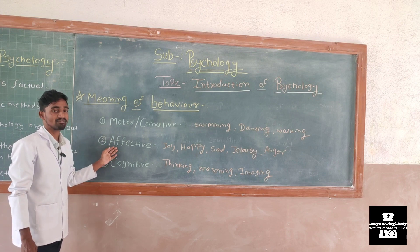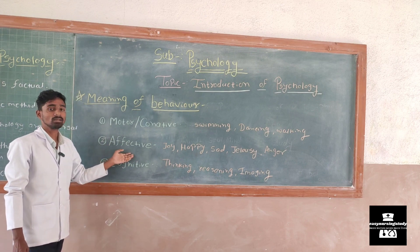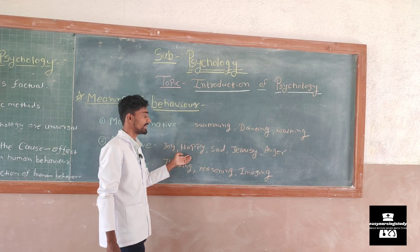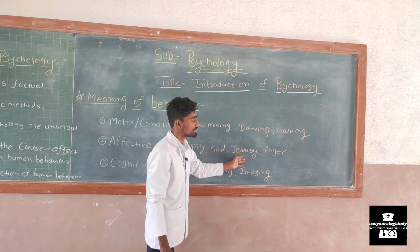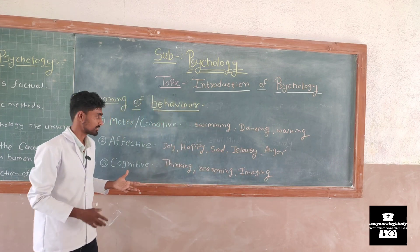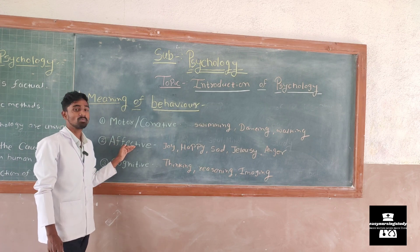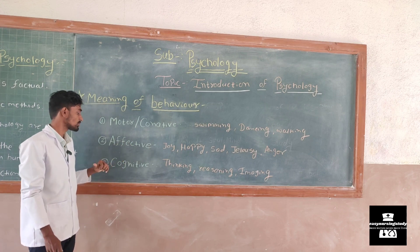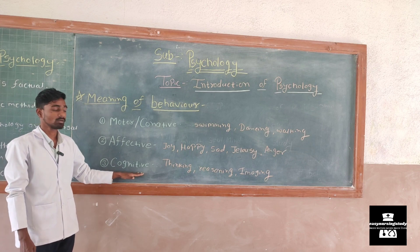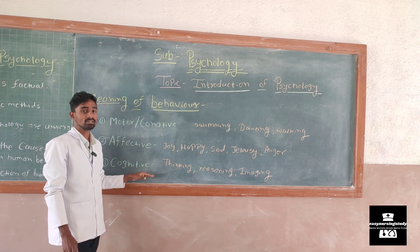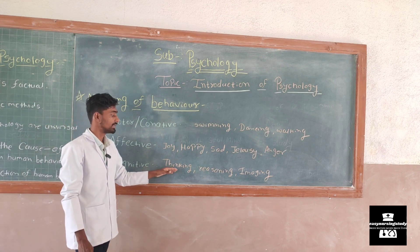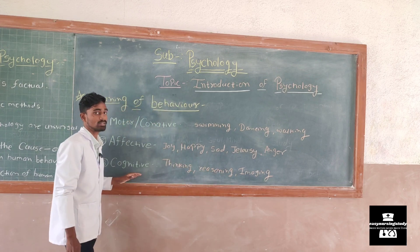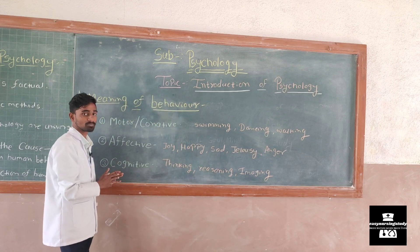The next manner is the affective manner. The affective manner includes the feeling of joy, happiness, sadness, jealousy, anger, and other emotions. The next is the cognitive manner, which refers to thinking, reasoning, and imagining — all these processes are part of the cognitive manner.